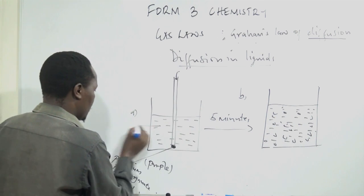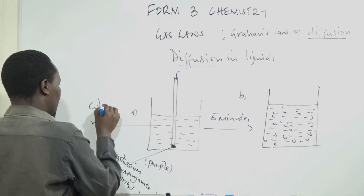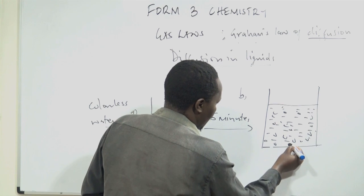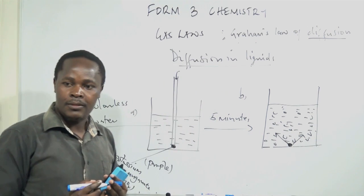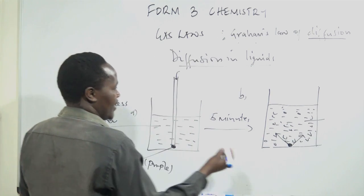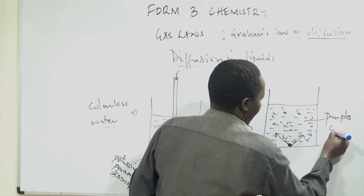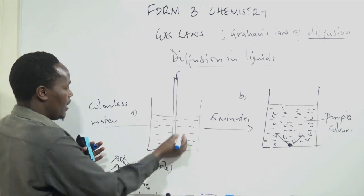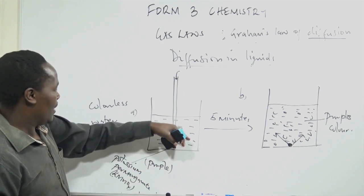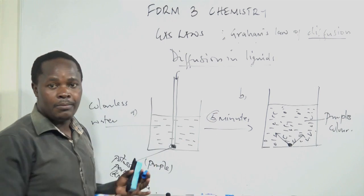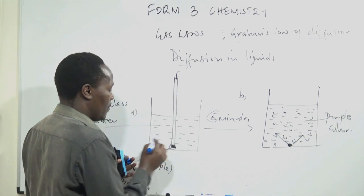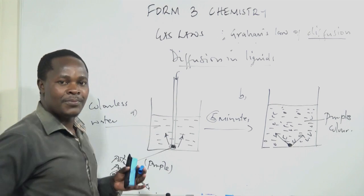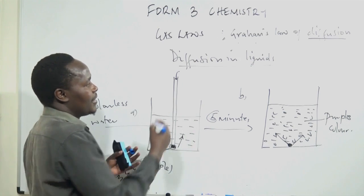The particles of potassium permanganate that were highly concentrated at the bottom have spread all over the liquid, so the liquid that was colorless now shows purple color. The purple color was concentrated at the bottom while the rest of the liquid was colorless, but after five minutes the whole liquid becomes purple. This means the particles of potassium permanganate have moved from where their concentration is high to a region where the concentration is low. This tells us that diffusion takes place in liquids.